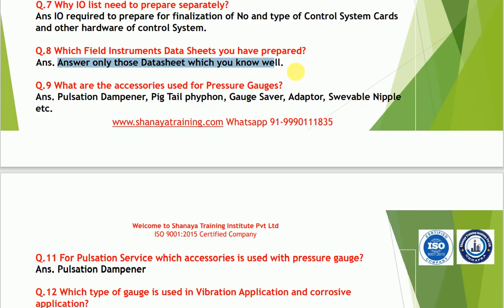When asked which field instrument data sheets you have prepared, only answer with data sheets you know well — because the next question will come from your answer and you need to be able to respond. Master your favorite instruments and only name those data sheets. Regarding pressure gauge accessories: pulsation dampener, pigtail siphon, gauge saver, adapter, swivel nipple, and so on are the common accessories of a pressure gauge.